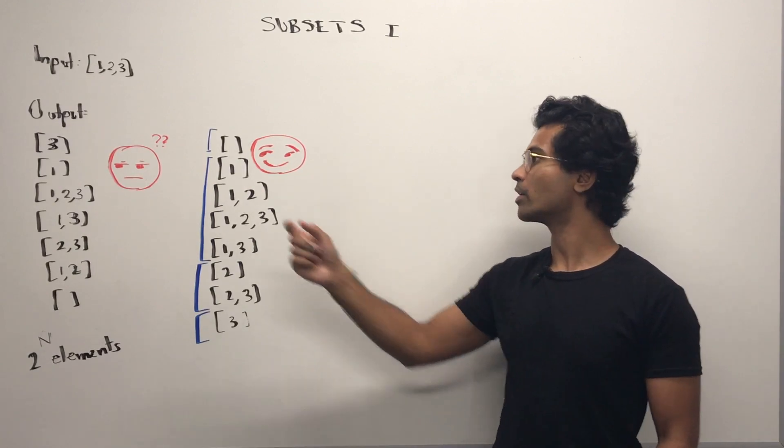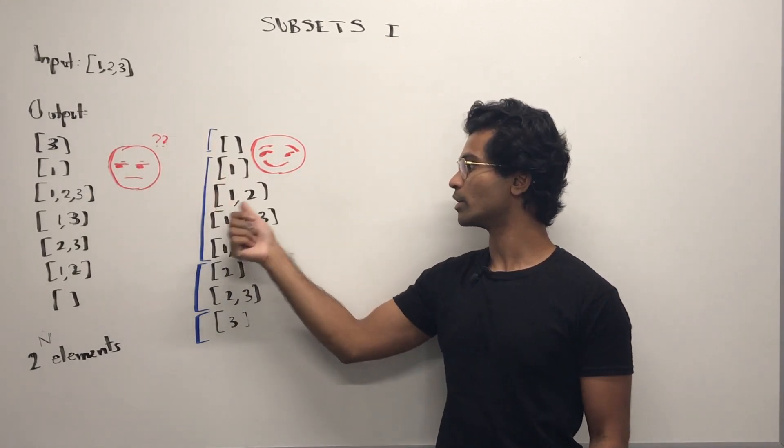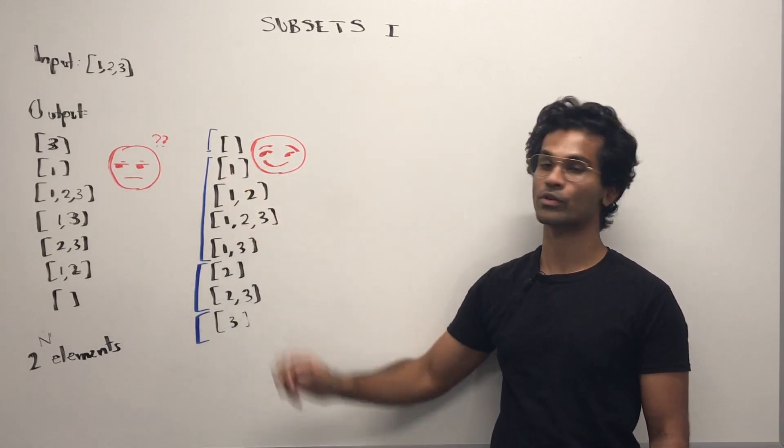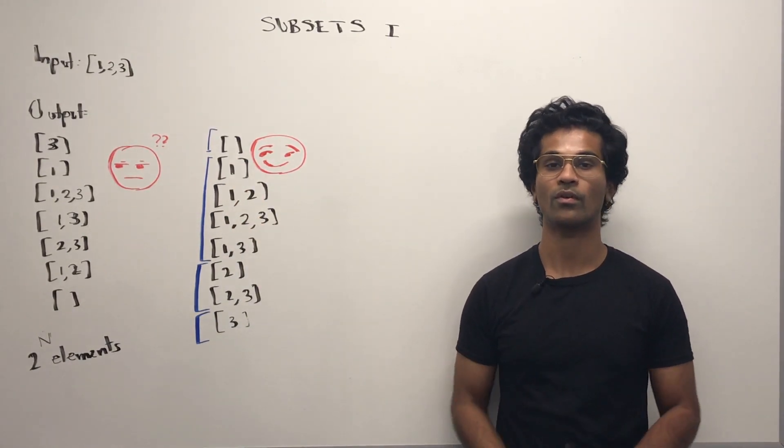Then I would add the second number. So two to the here and then I would have one and two. And finally, I would add three. So far we came up with the first four. That's simple so far.